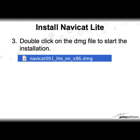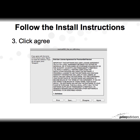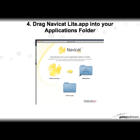The next step is to install NaviCat Lite. Double-click on the DMG file to start the installation process and follow the install instructions. For example, in step three, just click Agree. In step four, drag the NaviCat Lite app into the applications folder.